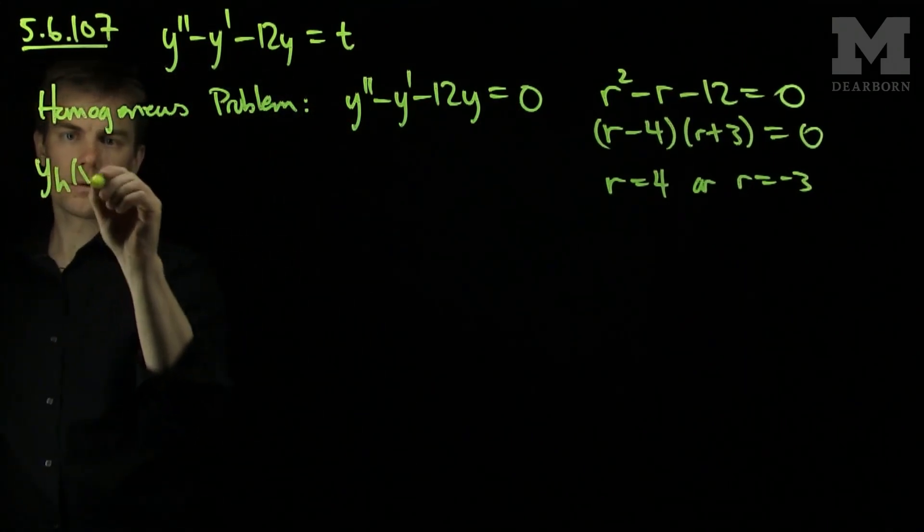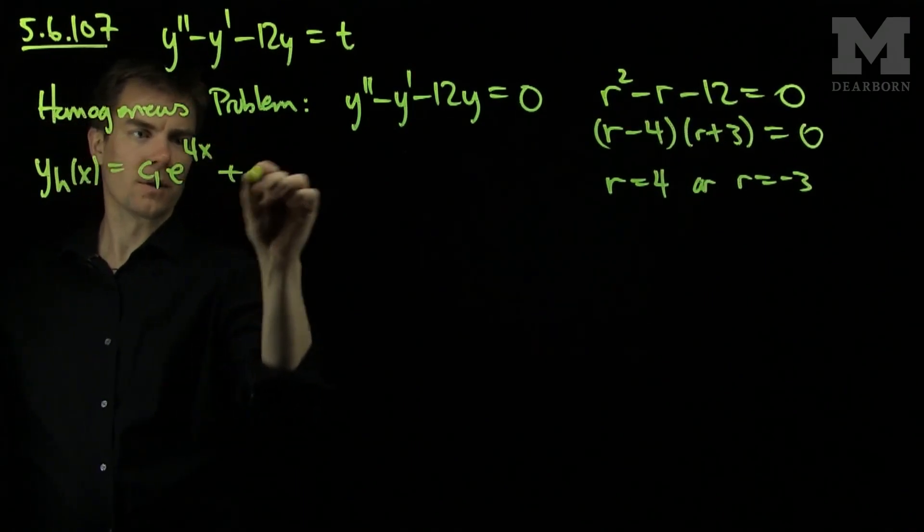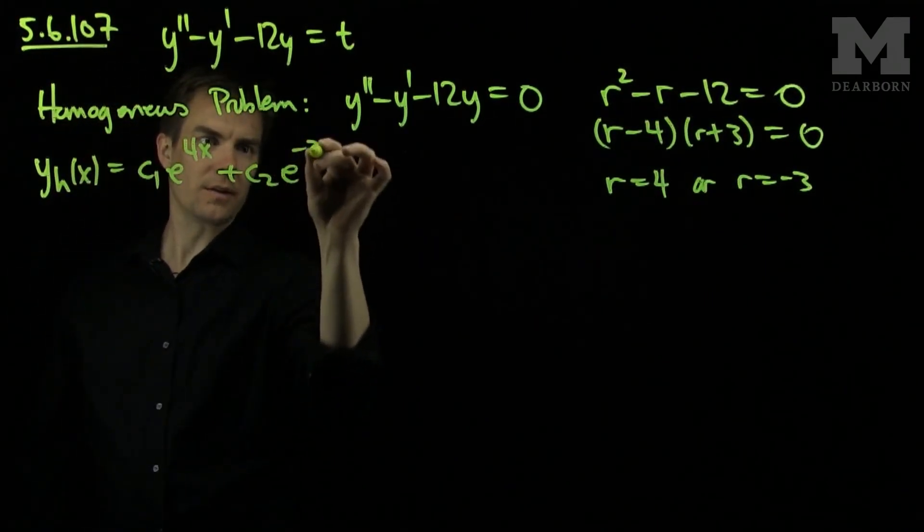Our homogeneous solution is c1e to the 4x plus c2e to the negative 3x.